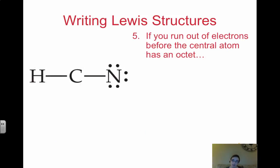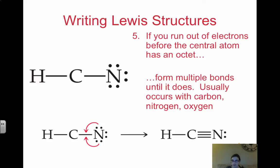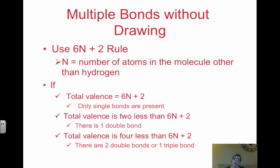If you run out of electrons before the central atom has an octet, then we have to form multiple bonds until it does. Multiple bonds occur with carbon, oxygen, nitrogen, and sulfur. Remember CONS. C-O-N-S. Carbon, oxygen, nitrogen, and sulfur.